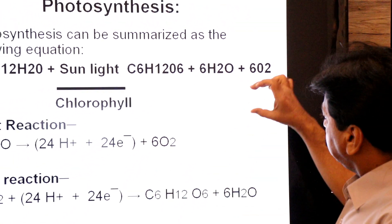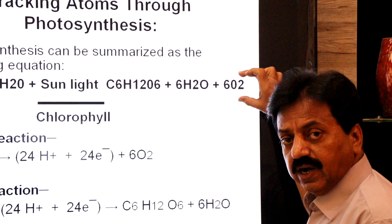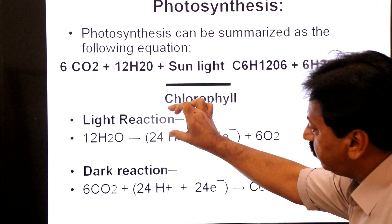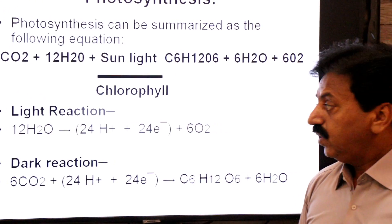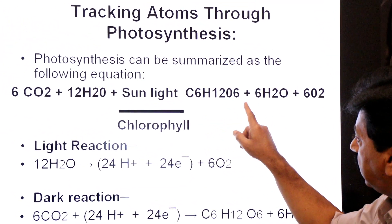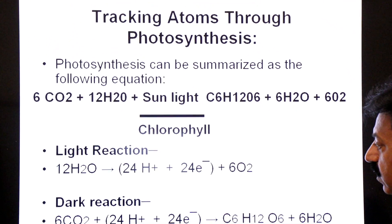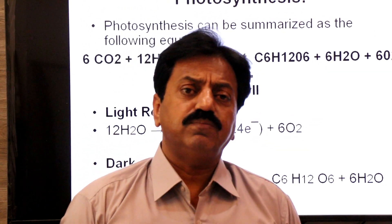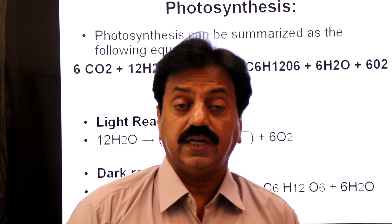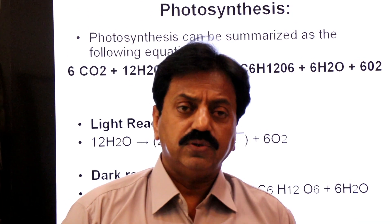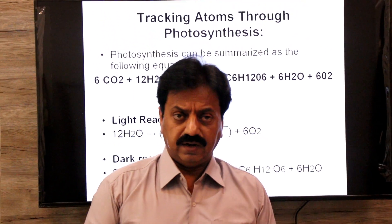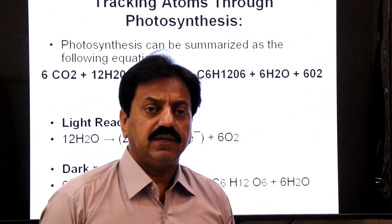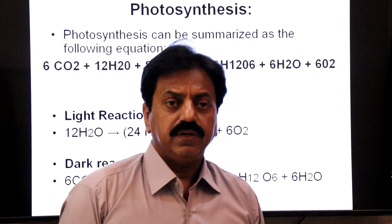The six molecules of oxygen are formed and released in the light reaction. Glucose and water are the two products of the dark reaction. All oxygen released during photosynthesis comes from the light reaction, while glucose, carbohydrates, and six molecules of water are manufactured during the dark reaction.